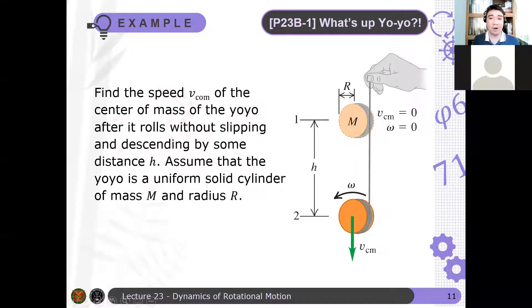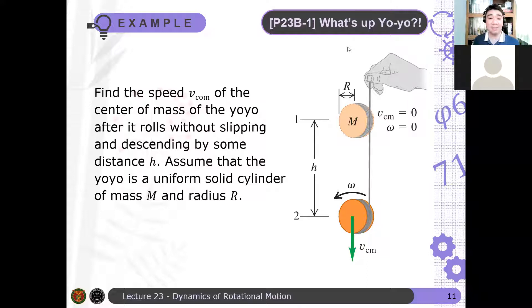Okay, first problem of the day: we have a WhatsApp yo-yo. Find the speed VCM of the center of mass of the yo-yo after it rolls without slipping and descends by some distance h. Assume that the yo-yo is a uniform solid cylinder of mass m and radius r.